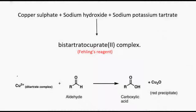The reactions that take place in the Fehling's test may be summarized as follows: the copper tartrate complex of Fehling's reagent reacts with a reducing sugar to form a carboxylic acid and a reddish precipitate of copper oxide.